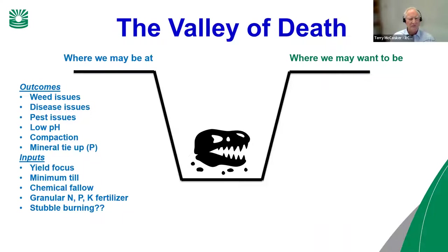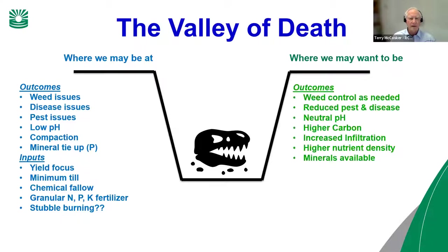Where we want to be as farmers is doing weed control as needed — in a cropping system you're probably not going to get away from weed control entirely, but we can certainly reduce it. There's lots of evidence of pests and diseases being eliminated when the Brix level of your crops comes up, which is a function of soil health. We can get soils back to much higher pHs, add carbon, increase infiltration, get higher nutrient density in our products, and make our minerals more available.